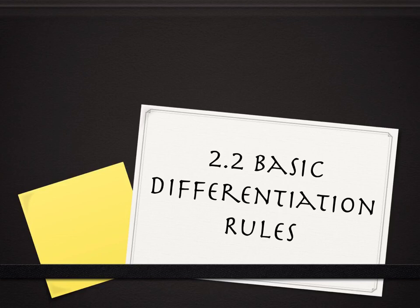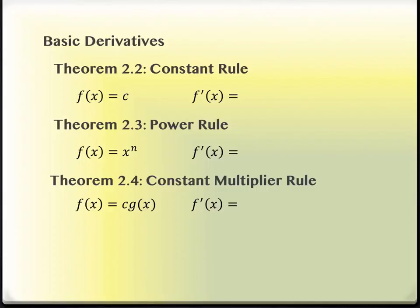So what we're going to do in this section is benefit from the people who came before us. The people who did the limit stuff that you all did, they did it enough to recognize there's some patterns here. There's some things that are always happening here. And because of that, I can actually shortcut the process and use the patterns instead.